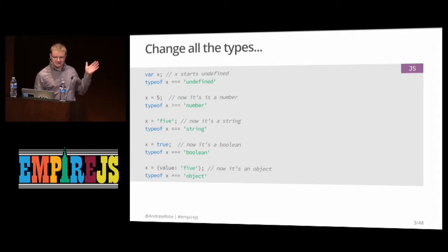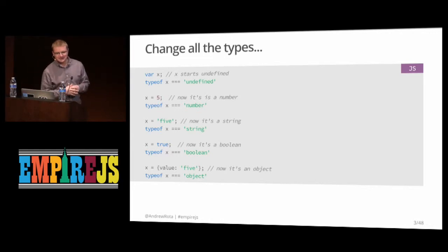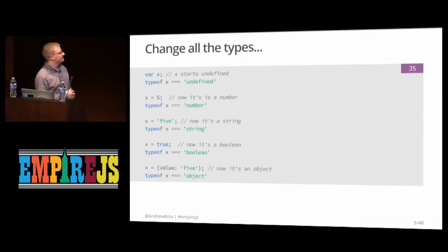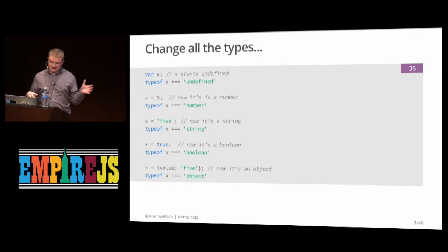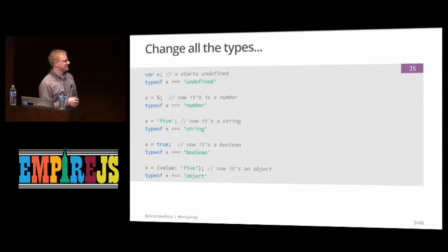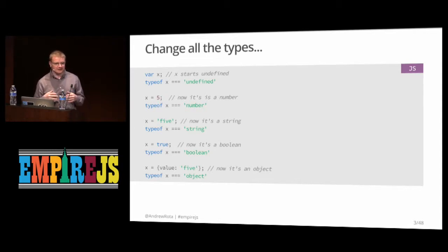You can do silly things like take a variable and change its value to all sorts of different types. We can start with X — its typeof is undefined, which makes sense. We can throw a number into it, change it to a string, a boolean, an object, or null — which is typeof object, because that makes sense. This can make it very difficult to reason about your code, and as your codebase becomes larger and your modules more complex, this becomes incredibly challenging.